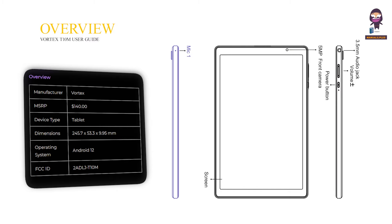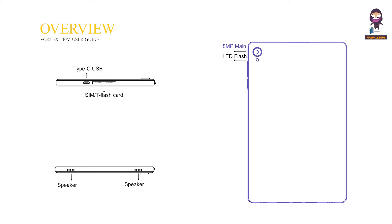Overview. Mic 1. Screen. 5MP front camera. Power button. Volume up, down. 3.5mm audio jack. 8MP main camera. LED flash. SIM and flash card slot. Type-C USB. Speaker.